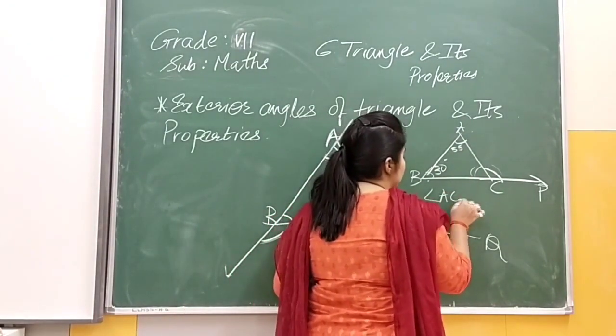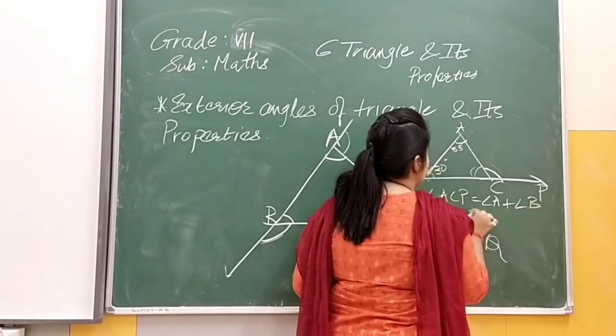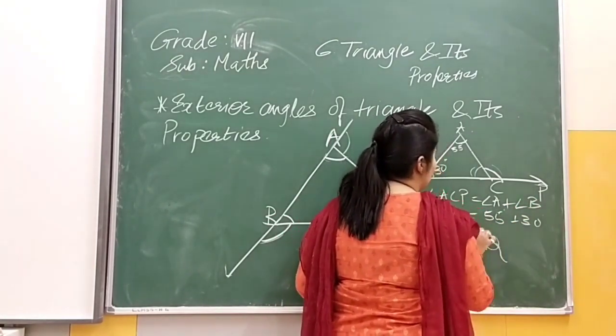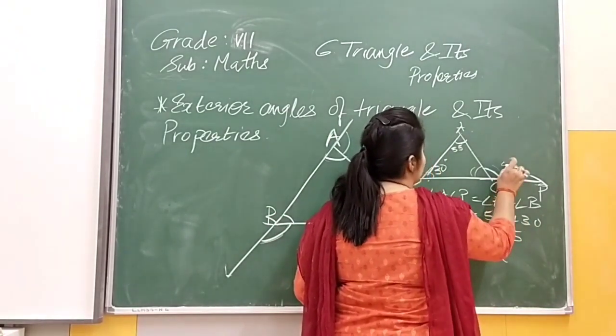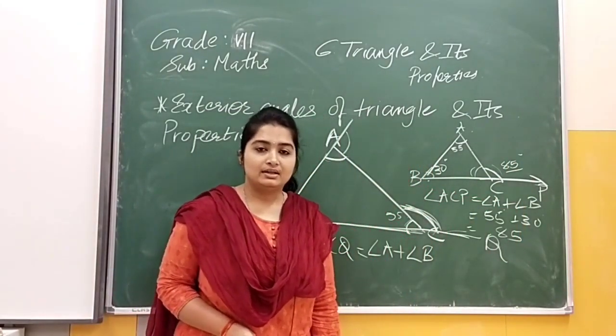Angle ACP is equal to angle A plus angle B. That will be 55 degrees plus 30 degrees. How much will it be? 5 plus 0 is 5, and 5 plus 3 is 8. That will be 85 degrees. This angle will be 85 degrees.